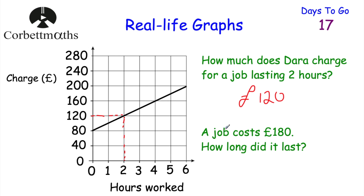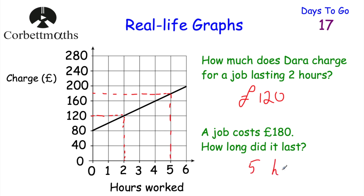The next question says: a job costs £180 - how long did it last? We go to £180 on the vertical axis. We've got £160 and £200, so £180 is in the middle. We go across from £180 to the line and then down. As you can see, that's a five-hour job. So the job lasted five hours.